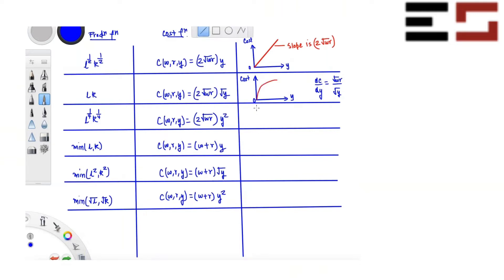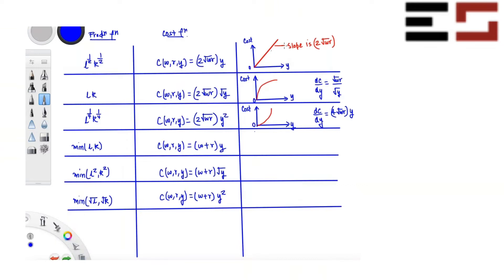Similarly, you can draw the cost function for the next one. You know how the graph of Y² looks — it's going to look like that. To verify using derivatives: DC/DY equals 4√(WR)·Y, so as Y increases the slope increases. Initially the curve is flat and then it gets steeper and steeper as Y increases. The remaining ones are also straightforward — for instance, one is a straight line with slope W + R.